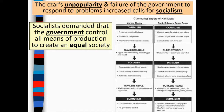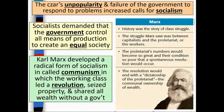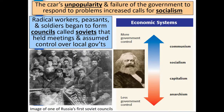The Tsar's unpopularity and failure of the government to respond to problems increased calls for socialism. Socialists demanded that the government control all means of production to create an equal society. Karl Marx developed a radical form of socialism called communism, in which the working class led a revolution, seized property, and shared all wealth without a government. Radical workers, peasants, and soldiers began to form councils called Soviets that held meetings and assumed control over local governments.